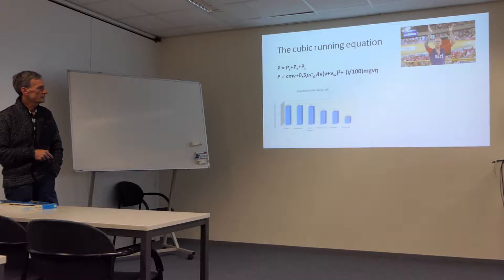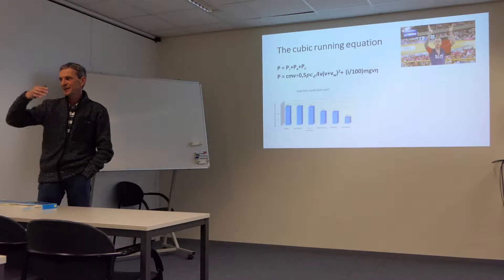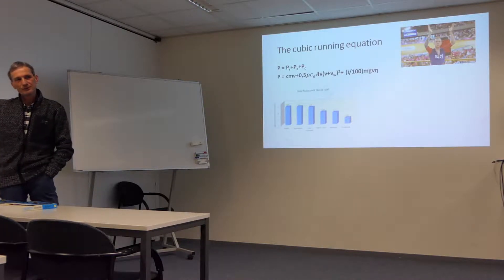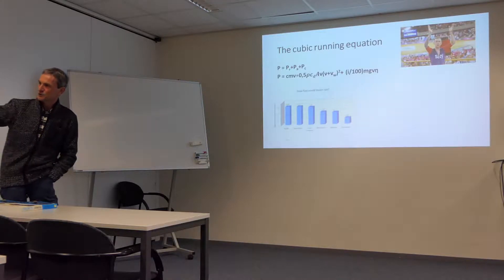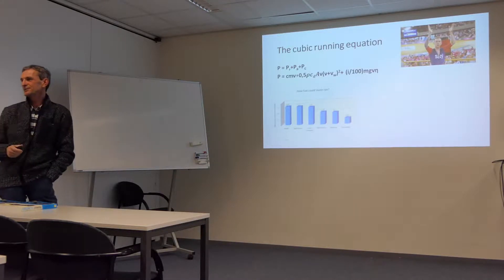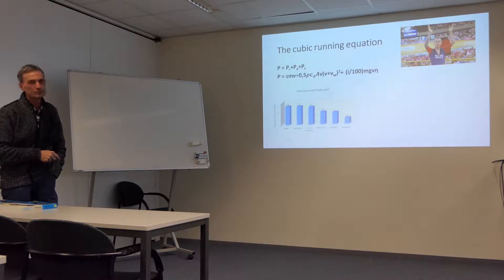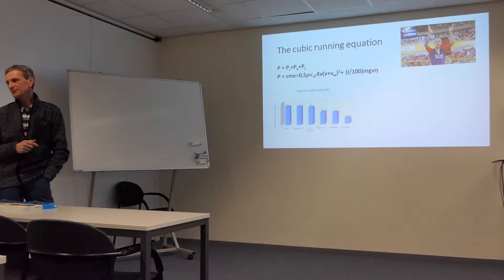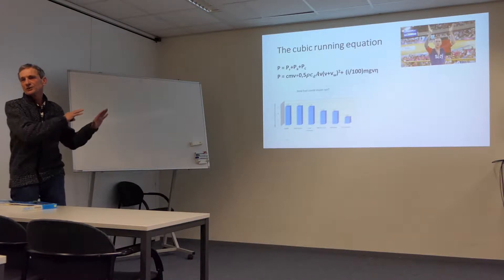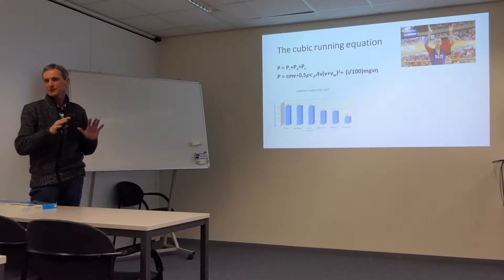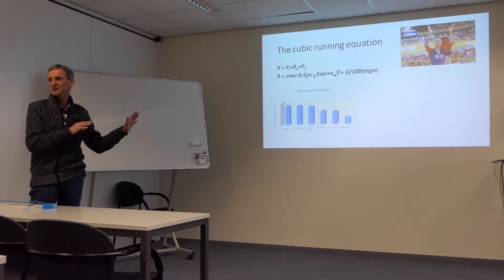Going to altitude — to Mexico — is a very big factor. If you could combine all these factors: running at altitude, at 25 degrees, with low pressure, and with two meters per second tailwind, he could theoretically run 9.18 instead of 9.58.